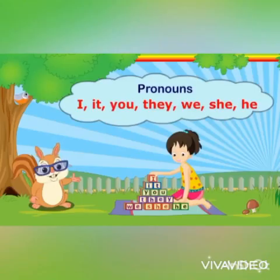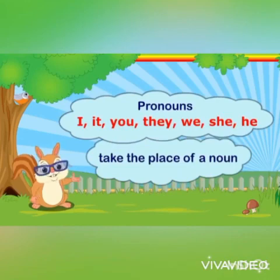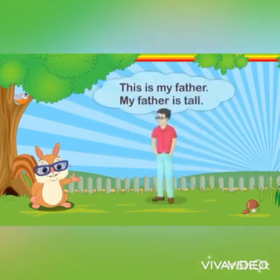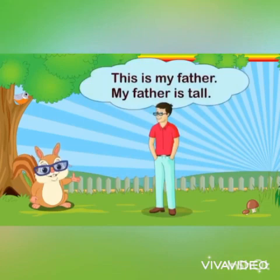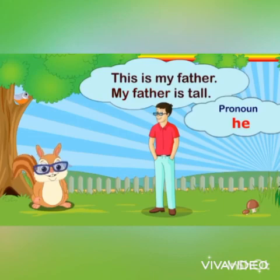Pronouns are: I, it, you, they, we, she, he. Pronouns take the place of a noun. So let's check out a few examples. This is my father. My father is tall. So we'll use the pronoun 'he' in place of 'my father,' and the sentence would be: he is tall.